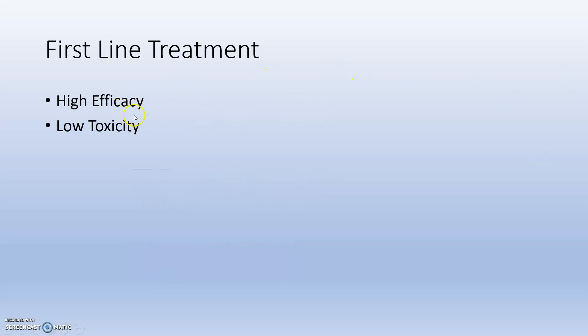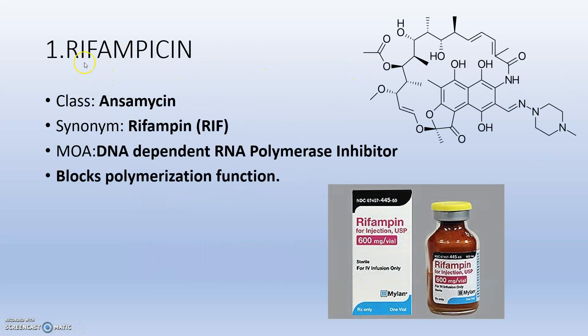The first drug is rifampicin, which belongs to the class ansamycin and the synonym is RIF. The mechanism of action is DNA-dependent RNA polymerase inhibition. Rifampicin, or rifampin, locks the polymerization function of this enzyme.